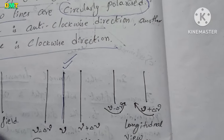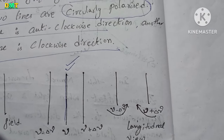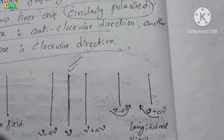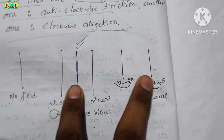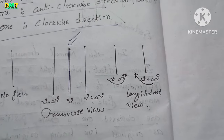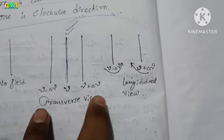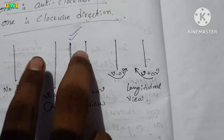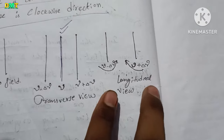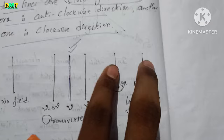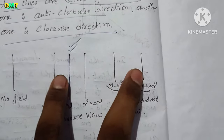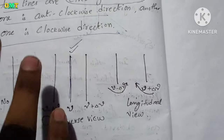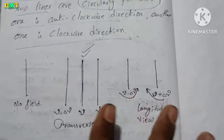This is the Zeeman Effect — it's straightforward. In the transverse view, three components are observed. In the longitudinal view, two components are observed. These two concepts together describe the Zeeman Effect.